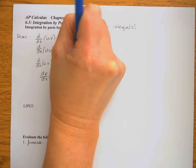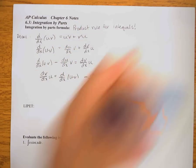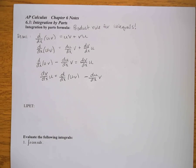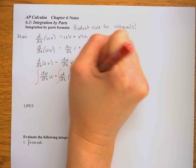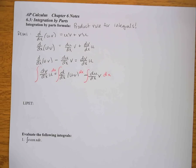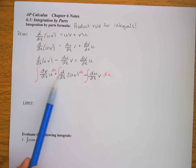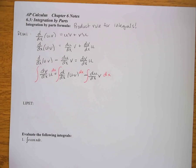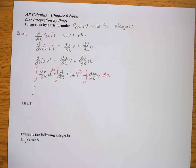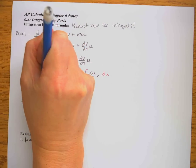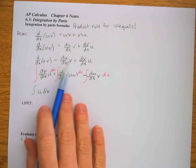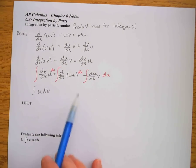Now I introduce the integral and integrate both sides with respect to x. On the left side, I'm integrating a derivative times a function, so I can't simplify that directly — I just cancel the dx's and call it the integral of u dv.